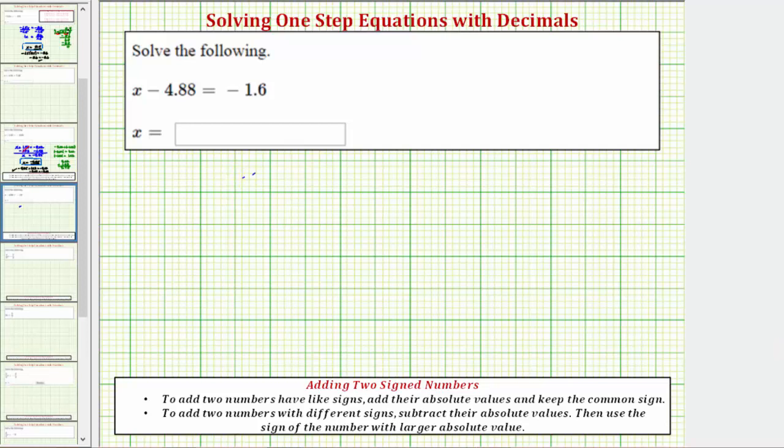We want to solve the equation x minus 4.88 equals negative 1.6. We can also read this as x minus 4 and 88 hundredths equals negative 1 and 6 tenths.